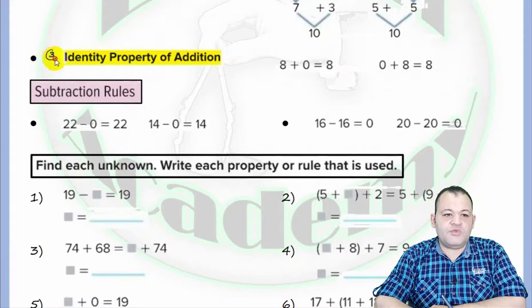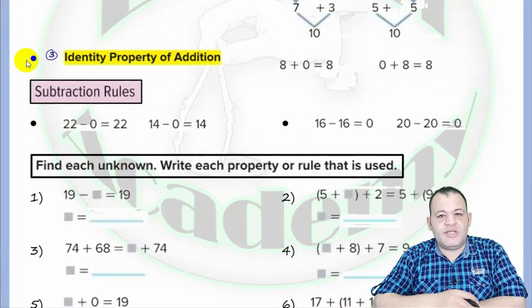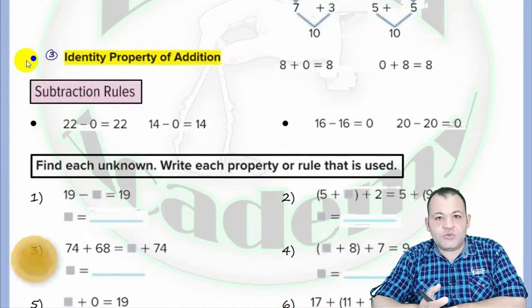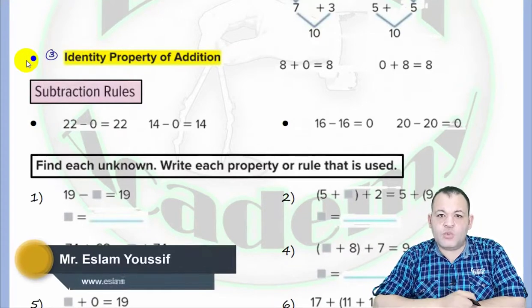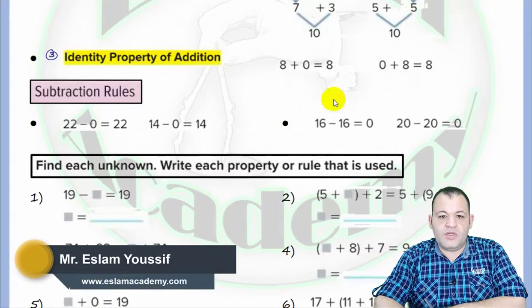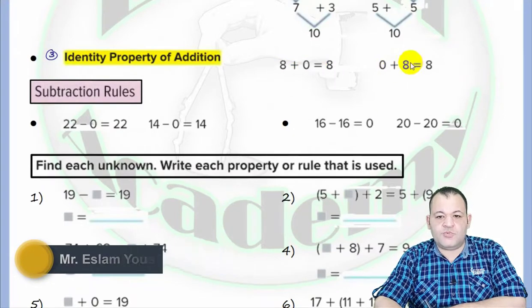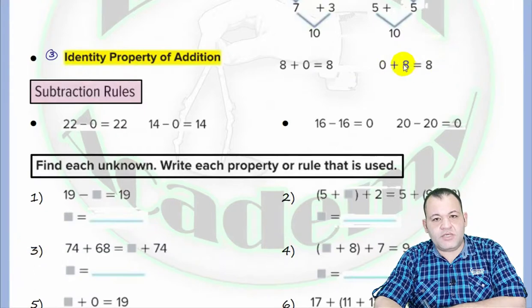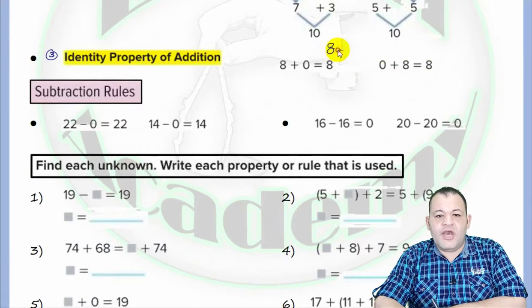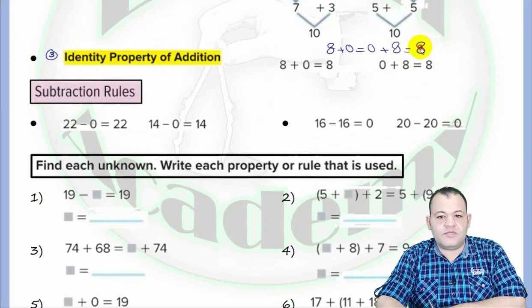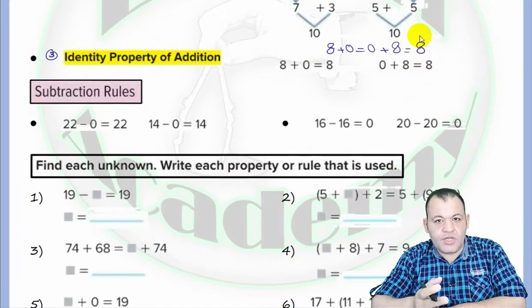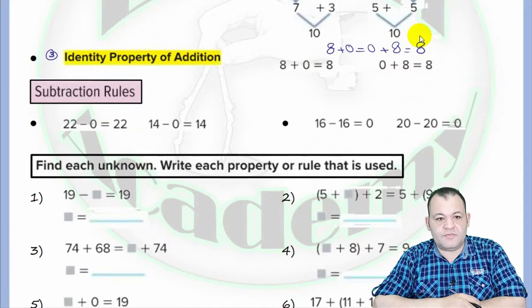Property number three is defined by the identity property. If you add zero to any number, the result will be the same. For example, 8 plus 0 equals 8, and 0 plus 8 equals 8. So 8 plus 0 is the same as 0 plus 8, which equals 8. If you add zero to any number, the result will be the same number.